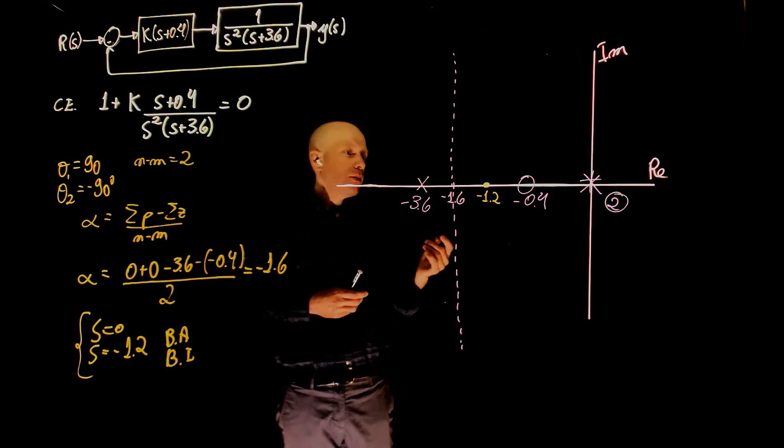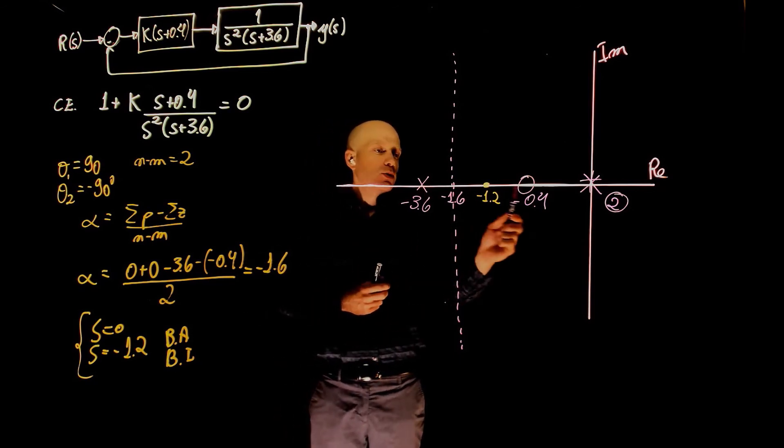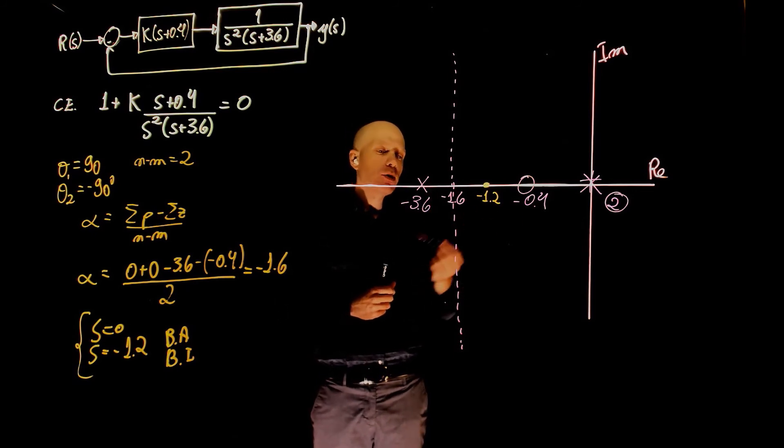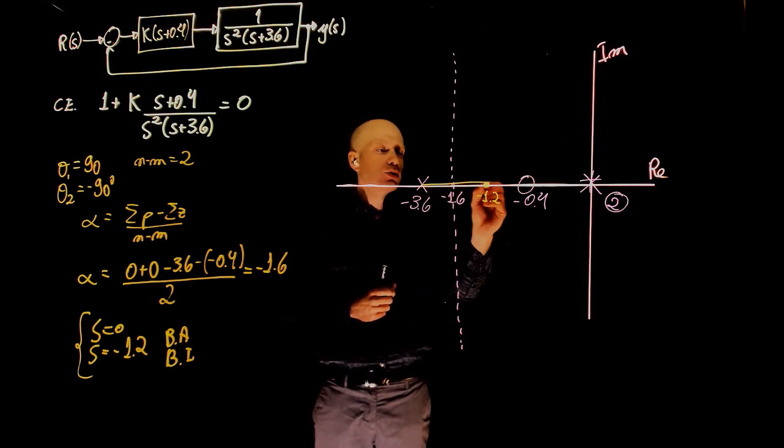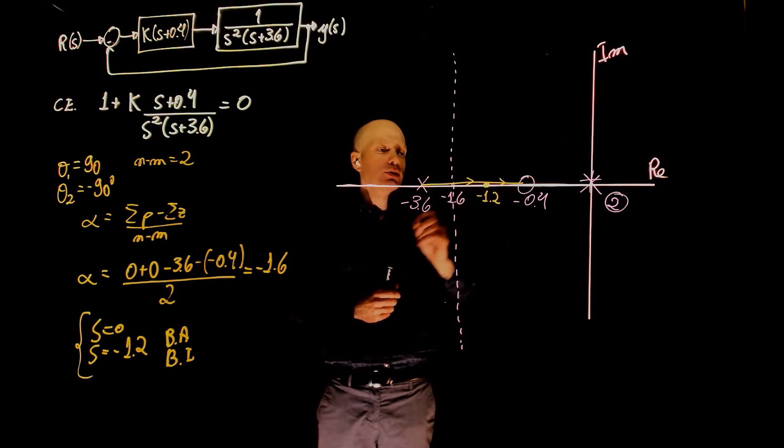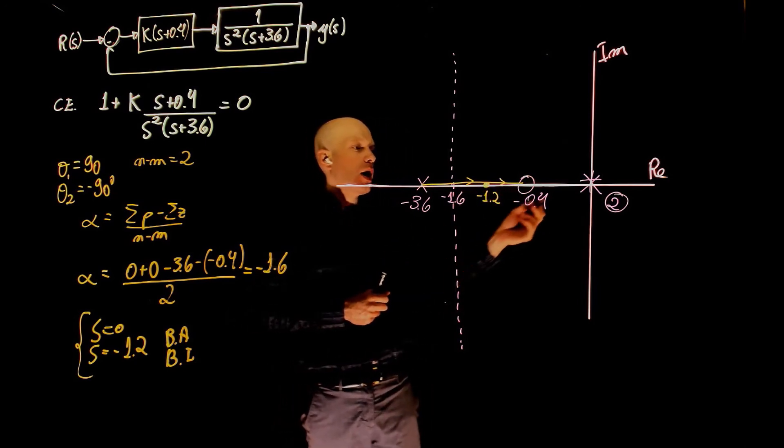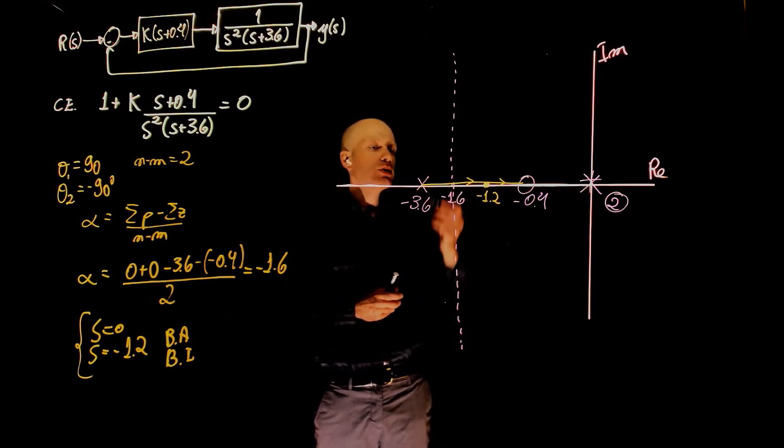So, now, because the root locus exists between this pair of poles and zeros, so this pole needs to go to that zero. There is no other solution. And these two poles will need to use the asymptotes.